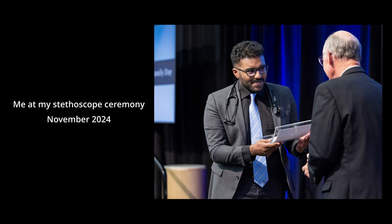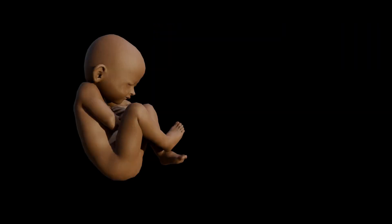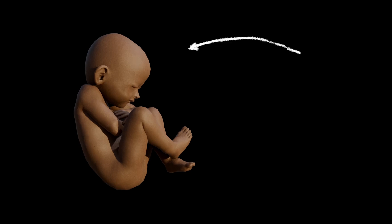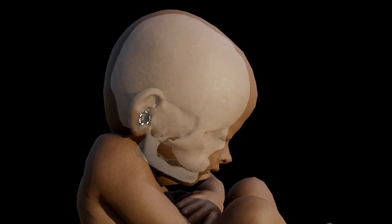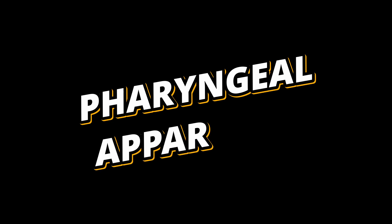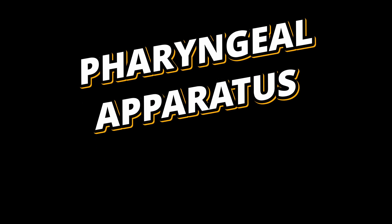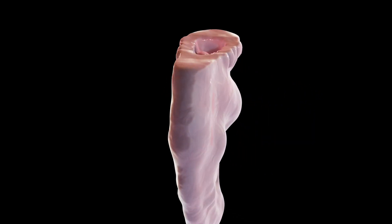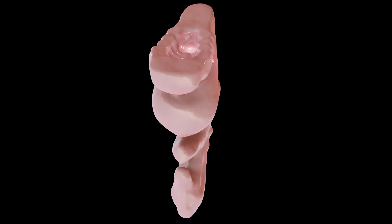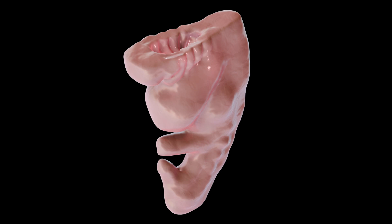Hello and welcome. My name is Kalib and today we're diving into one of the coolest processes in development, the formation of the structures that make up your head and neck. Think about it, everything from your jaw to your middle ear to parts of your throat starts with a transitory structure called the pharyngeal apparatus. It's pretty wild when you realize just how much is happening behind the scenes. Today we're taking a closer look at the mysterious and fascinating journey of the pharyngeal apparatus, so let's get started.